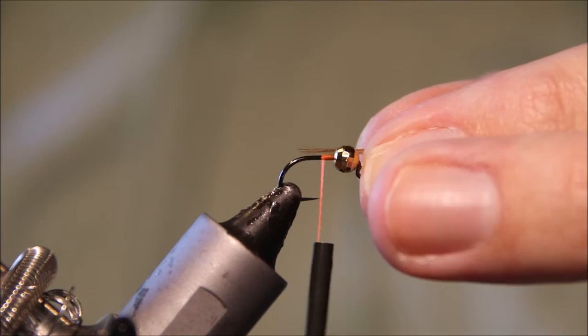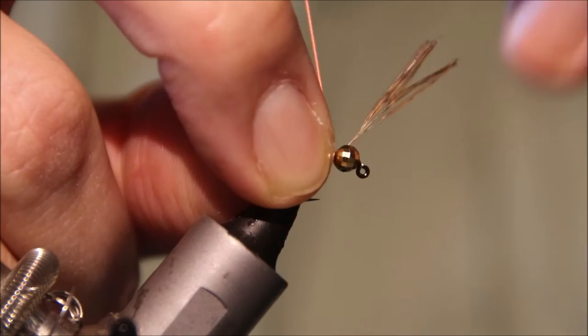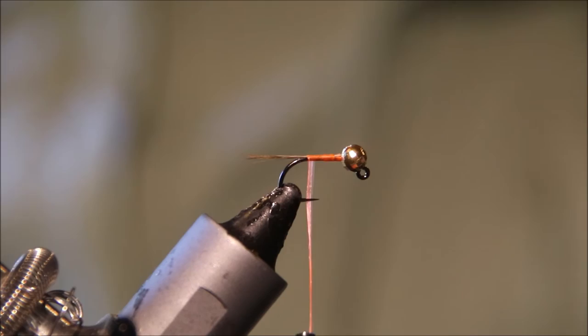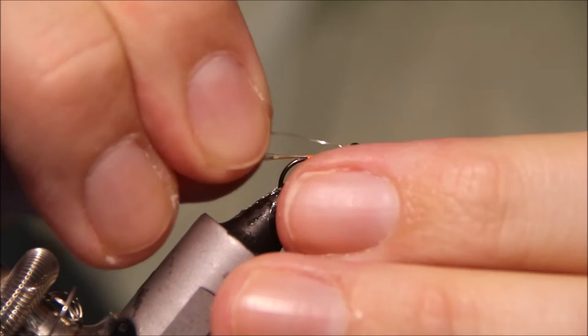Tail is Cock de Leon, and I'm just going for a bit of shank length. Just catch this off, tie it down the length of the shank. This helps give you a nice smooth body, helps you to build the taper.